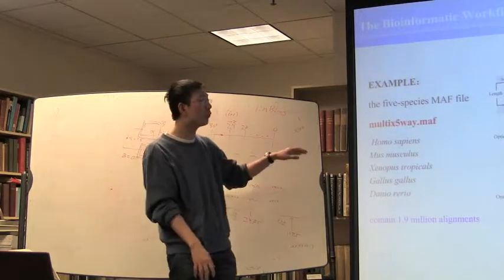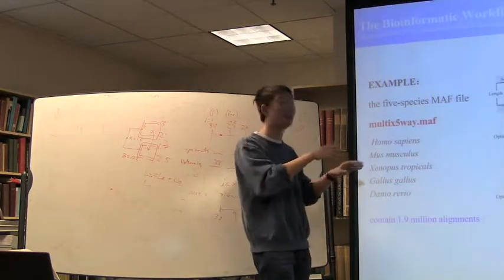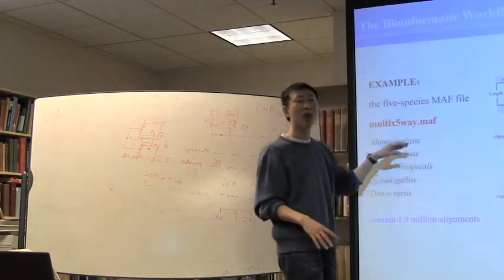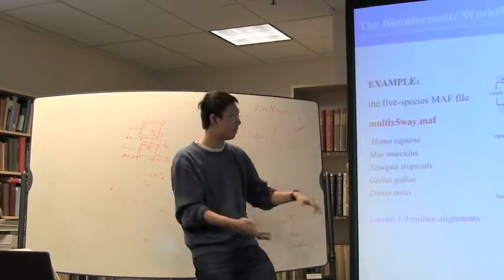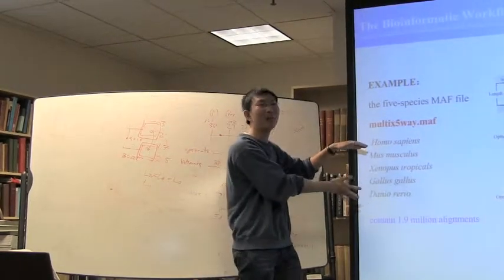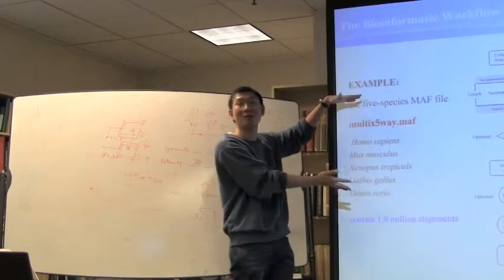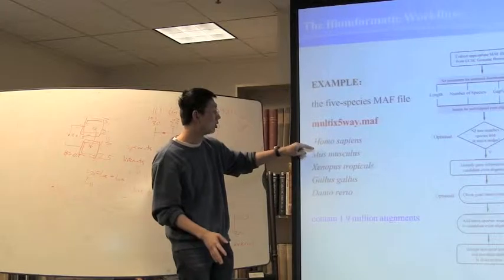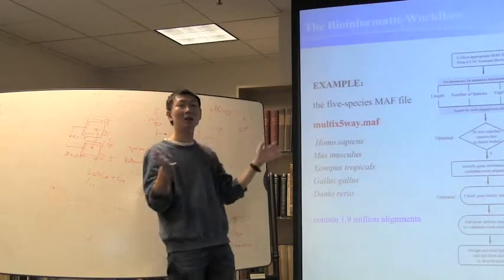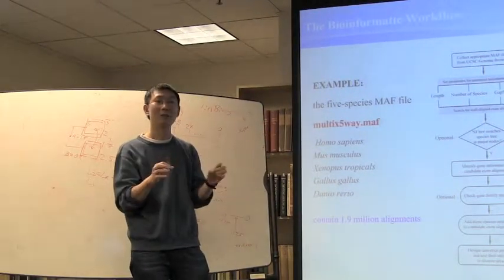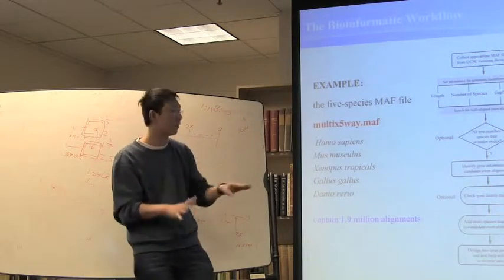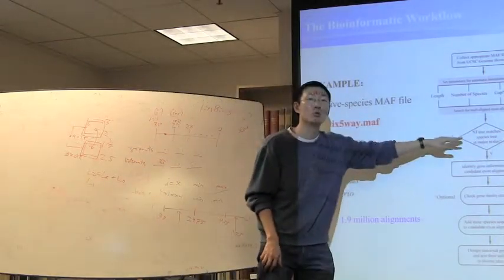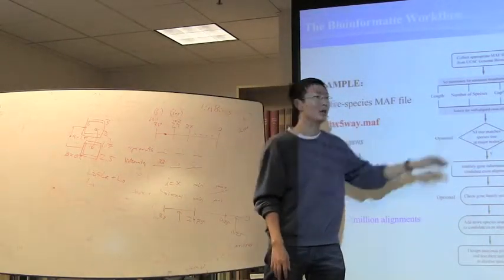One reviewer liked that I use an NJ tree step here, asking how do you know the expected topology? I explained: because this is simple — fish, frog, chicken, human, mouse — these five species' relationships are quite clear. If you use 10 species with many mammals, you wouldn't know the mammal tree for sure, so it's better not to do that. For this specific case we use an NJ tree. It's not strictly necessary, but it helps.